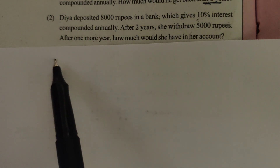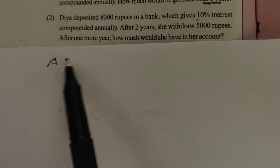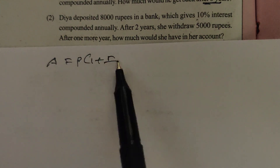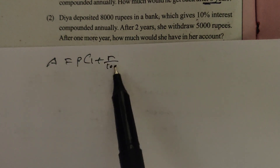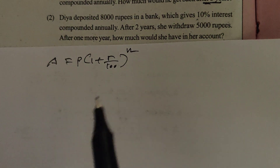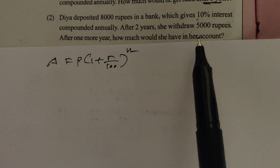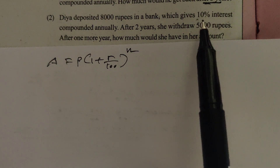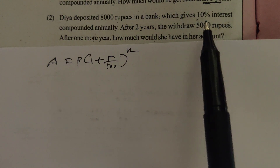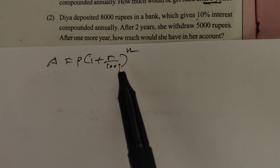We need to calculate using A = P × (1 + R/100)^N, applying 10% interest to find the amount after two years first.